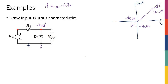Once my diode turns on, this becomes a voltage source. The diode goes away and I'm going to have a voltage source with positive polarity on the bottom. The value of that voltage source is V_D_on. Since here is ground, V_out is going to be negative V_D_on. So below that negative V_D_on, I'm going to have an output that is fixed.